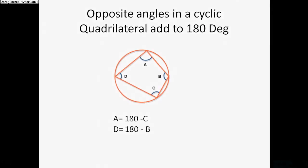Opposite angles in a cyclic quadrilateral add to 180 degrees. So a plus c would equal 180, or a equals 180 minus c. D plus b would equal 180, or d equals 180 minus b.